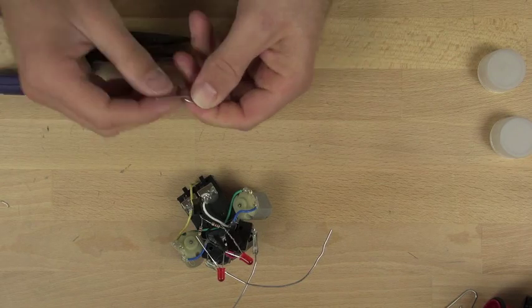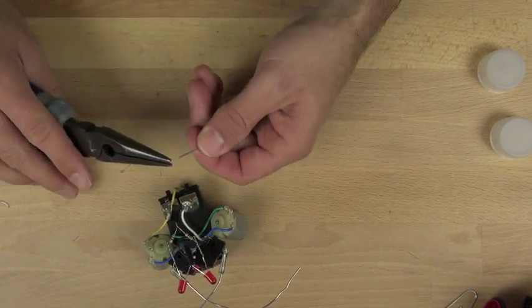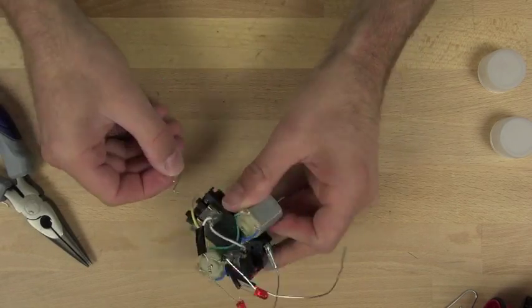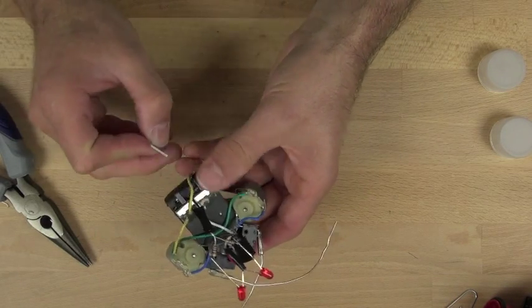You can sort of make yours whatever shape you like, but this basically will allow the bot to have a lot less drag on the ground. So it works pretty well when it's running over a smooth surface.